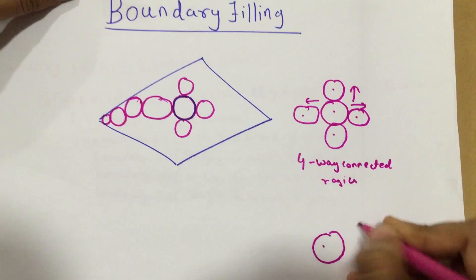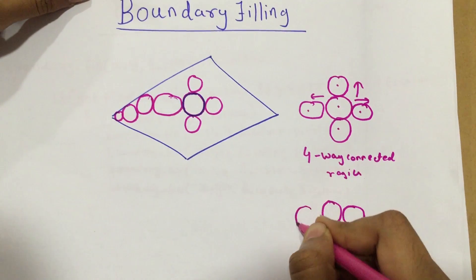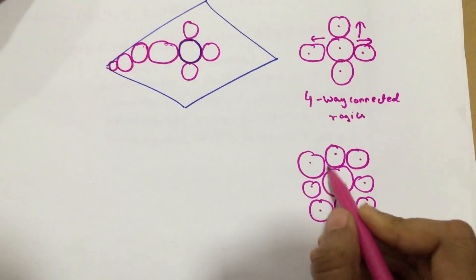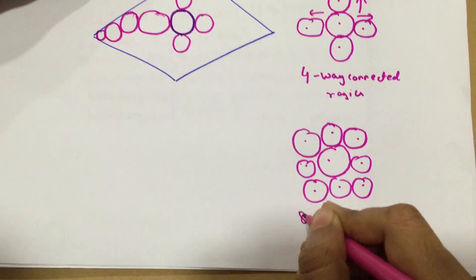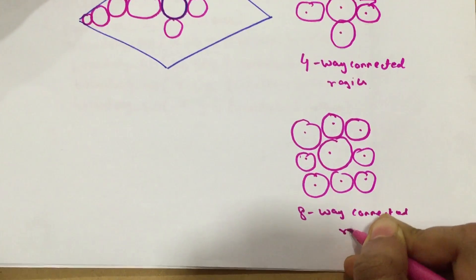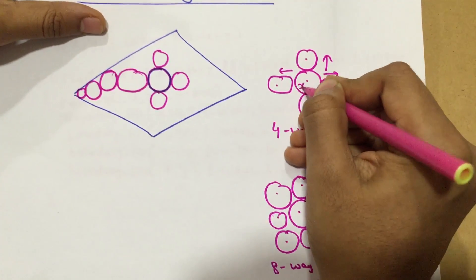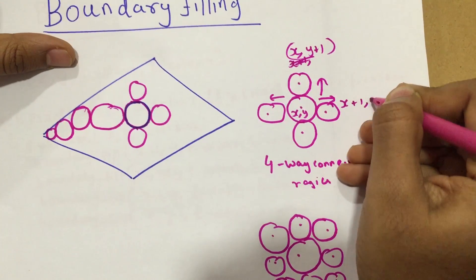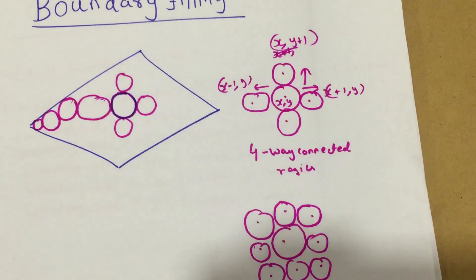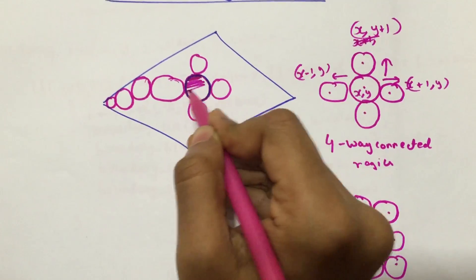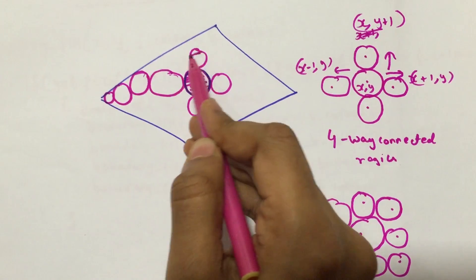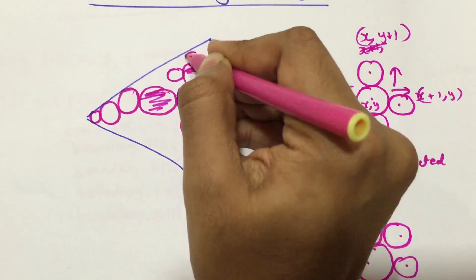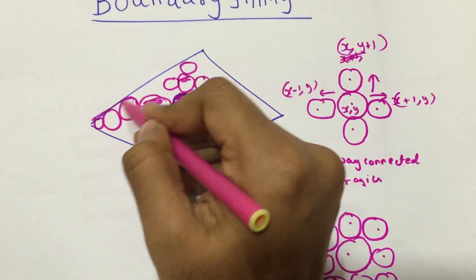Also, if I consider diagonal points like northeast, northwest, southwest, or southeast, then in totality I have eight pixels — giving me an eight-way connected region. So let's say if this pixel is at (x, y), then the pixel above is (x, y+1), to the right is (x+1, y), and to the left is (x-1, y). We start from the seed, color that pixel, then start coloring the neighboring pixels, and each of those pixels is again fed into the algorithm. We continue until we find the boundary color.